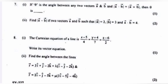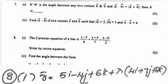The Cartesian equation of a line is (x−5)/4 = (y+4)/7 = (z−6)/2. Write its vector equation. Answer: r = (5i − 4j + 6k) + λ(4i + 7j + 2k).